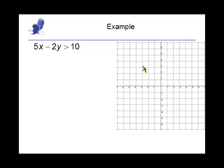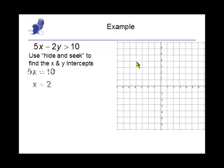If we look at this next example, we have this inequality 5x minus 2y greater than 10. Our first part is to be able to graph the equation 5x minus 2y equals 10 to find the boundary line.